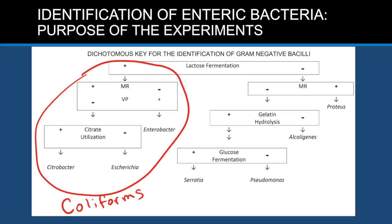Bile esculin agar contains the substrate esculin. If bacteria produce the enzyme esculinase, they will hydrolyze esculin, which is clear, to produce esculetin, which is dark brown. By testing your organism for bile tolerance and for enzyme activities, you will be able to narrow down the identity of your unknown.